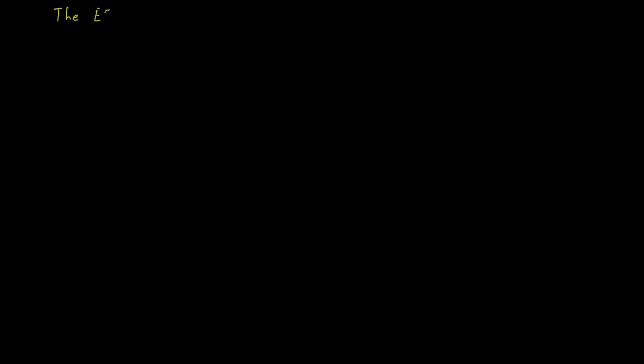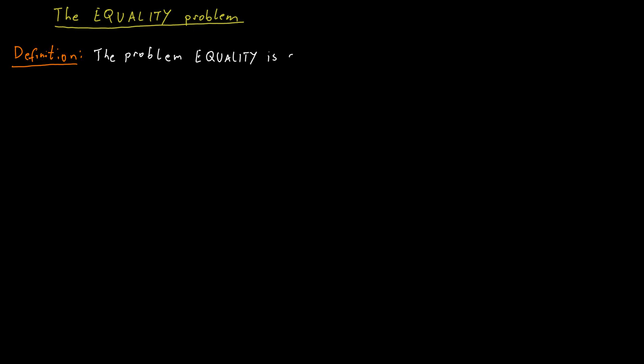We would also like to be able to prove lower bounds. So for a function f, we would like to make a statement of the type: function f cannot be solved with communication protocols that use fewer than a certain number of bits of communication. To see an example of this, we will look at a different function. The function we're looking at is equality. So we have this function f of x and y, and the function is equal to 1 if and only if x is equal to y, and it is 0 otherwise.